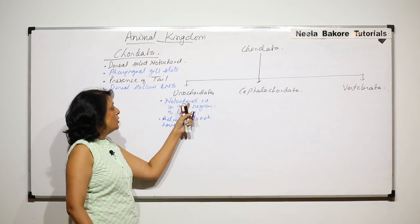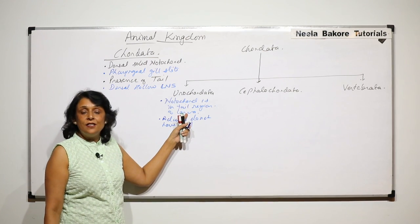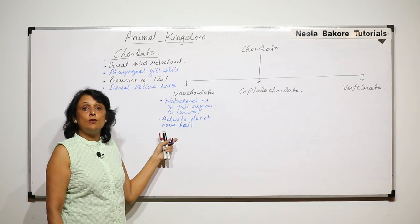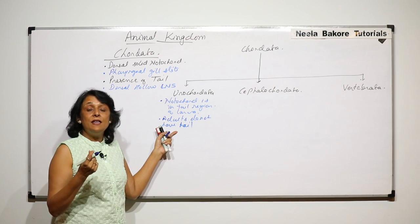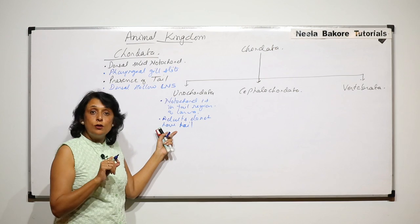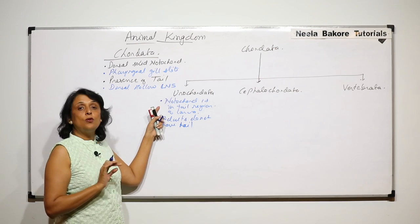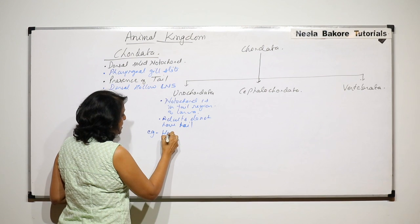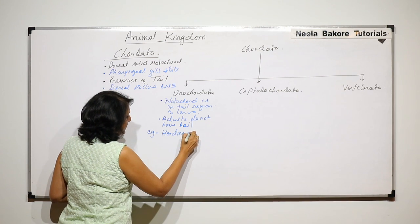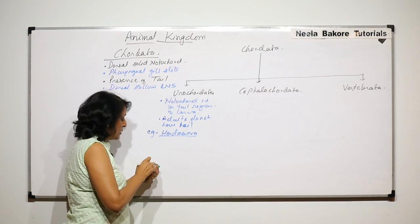In retrogressive metamorphosis, the developed structures in larval stage are lost. So the adults do not have tail. If the notochord was in the tail and this tail is lost, adults do not have notochord. An example is Herdmania.